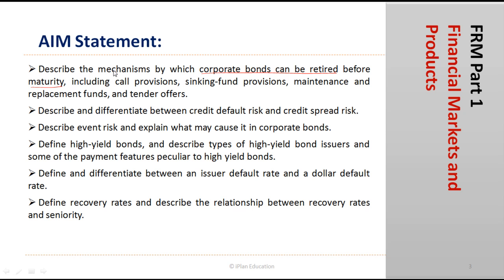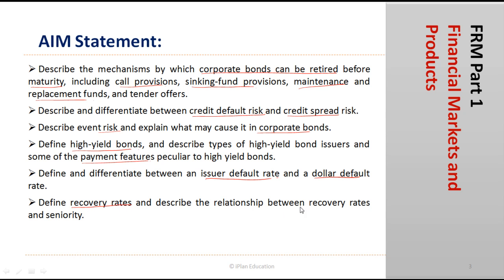We will also look at various security types such as mortgage bonds, collateral trust bonds, equipment trust certificates, debenture bonds, and guaranteed bonds. We will also look at the mechanisms by which corporate bonds can be retired before maturity, including call provisions, sinking fund provisions, and maintenance and replacement funds. We will differentiate between credit default risk and credit spread risk, look at event risk, high yield bonds, issuer default rate, dollar default rate, and recovery rates.